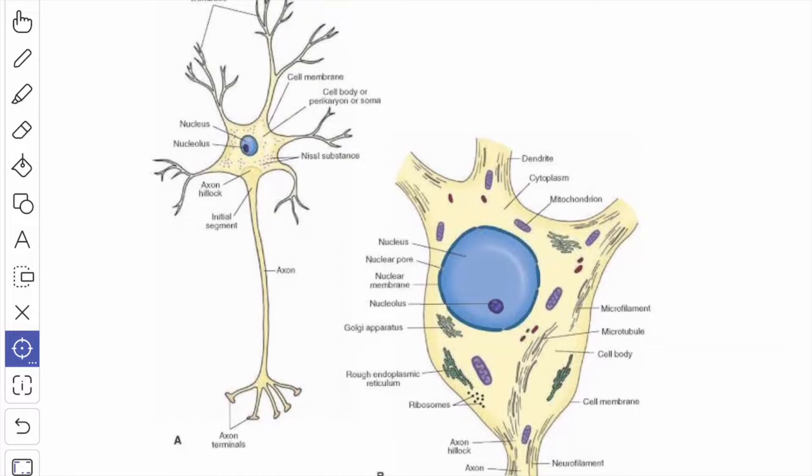When the nerve cell is injured or fatigued, the Nissl bodies disappear and this process is known as chromatolysis, which is a reversible process within certain limits.